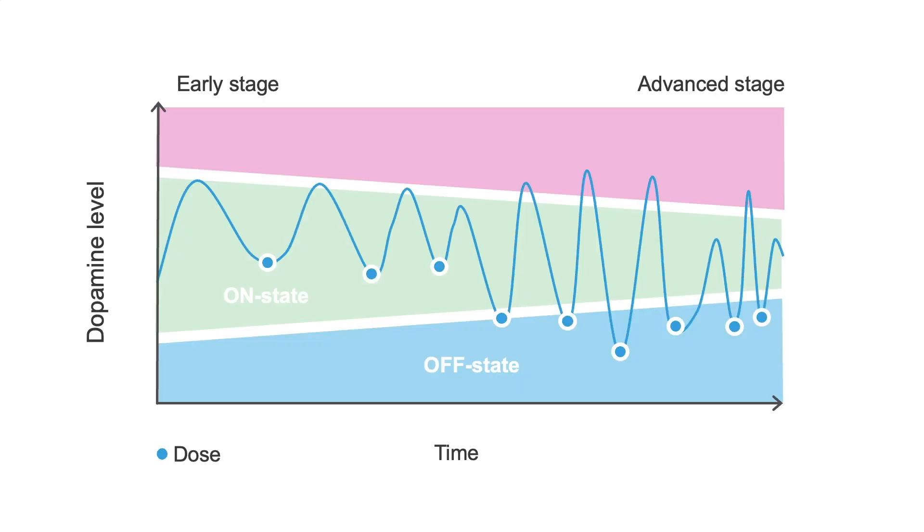When patients alternate between the on and the off states, this phenomenon is called motor fluctuations. In middle and advanced stages, individuals may also experience dyskinesia as the dopamine levels peak in the blood.